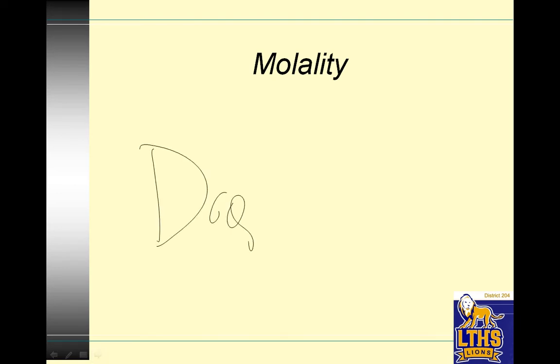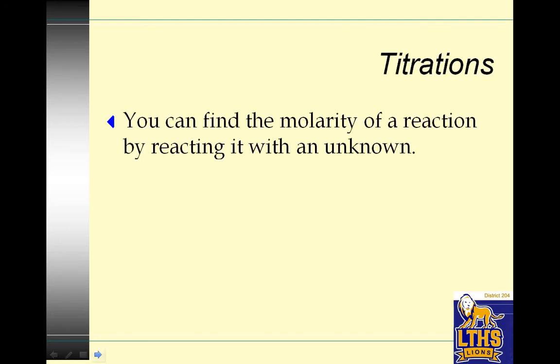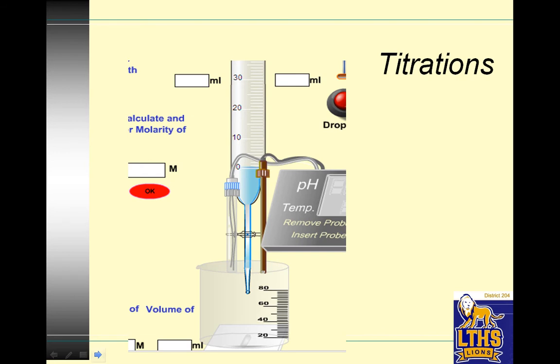Molality dropped from the AP exam. Woo-hoo! Titrations. You can find the molarity of a reaction by reacting with an unknown. This is usually done with acids and bases, but it can be done with anything. Redox titrations are also common, and the titration ends with a color change. This is called a burette. And what happens is you add a drop, drop, drop, drop, drop, change the color.